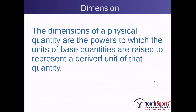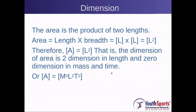The number of dimensions of a physical quantity are denoted by the powers to which the base quantities are raised to get a derived quantity. For example, area has two dimensions of length — length and breadth — so you have length multiplied by length, denoted as L squared. Therefore, area can be denoted as L squared, and the dimension of area is two.